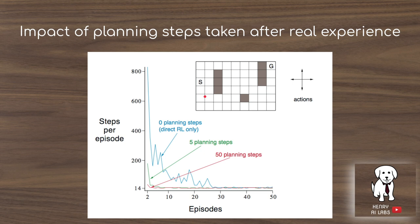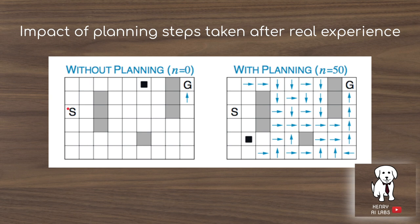Comparing n=0 (no planning), n=5, and n=50 planning steps between real experiences: in this toy maze problem, without planning the agent can only update the state right before the goal. With n=50 simulated planning steps, it updates far more of the trajectory through the state space, leading to much faster learning.